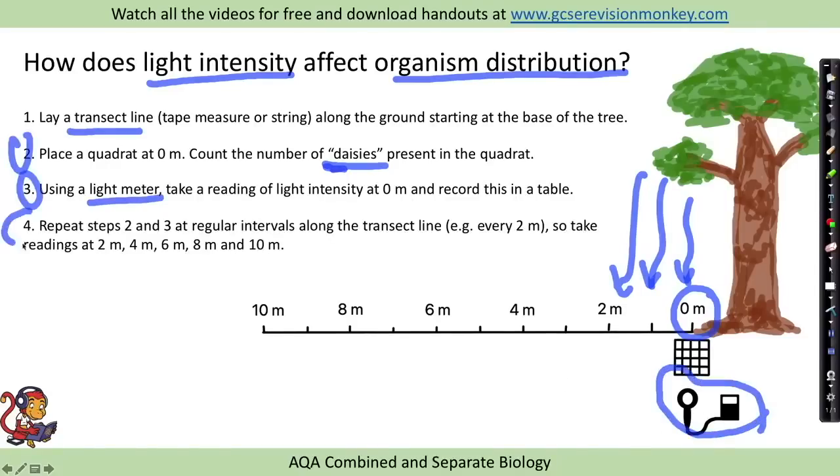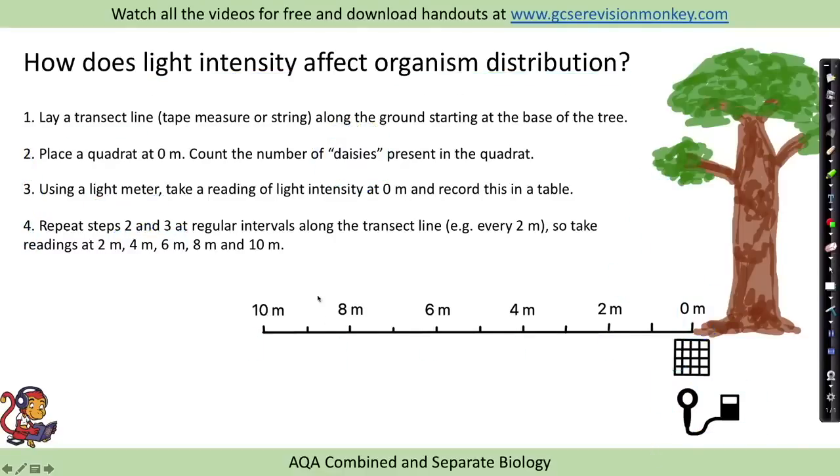We then repeat steps two and three at regular intervals along the transect line, for example every two meters. We place our quadrat and our light meter here, here, here, here, here, each time counting the number of organisms and calculating the light intensity. Now I want you to imagine that we're sampling in a woodland and along the transect away from the tree there's lots of long plants and long grasses.